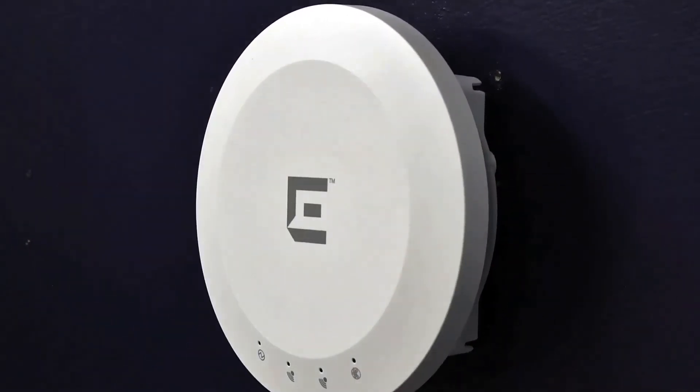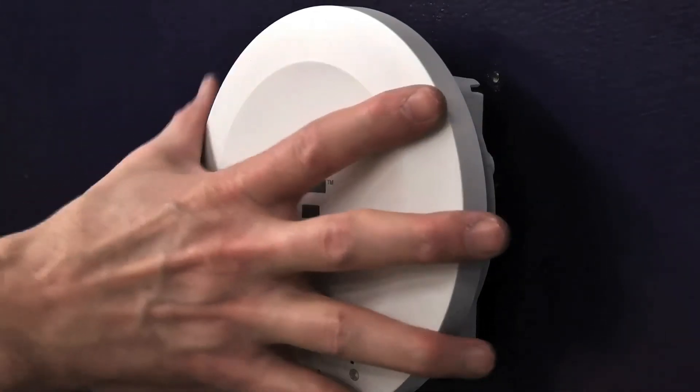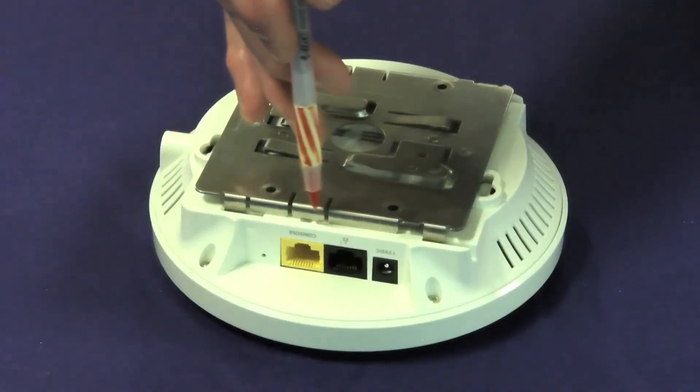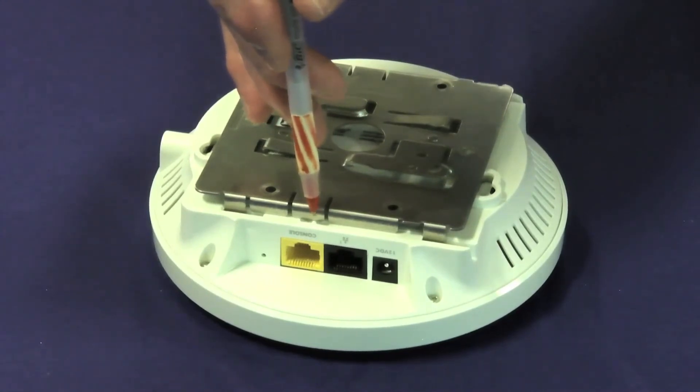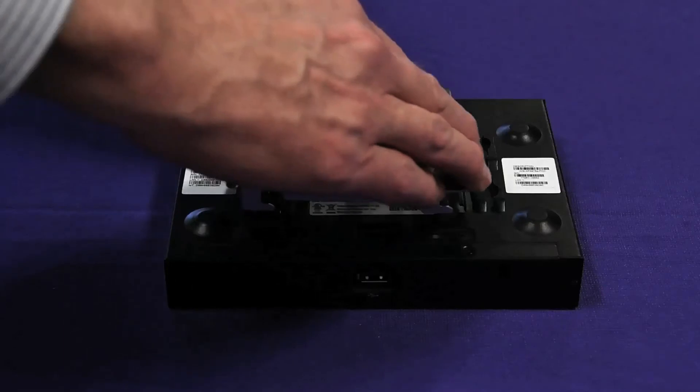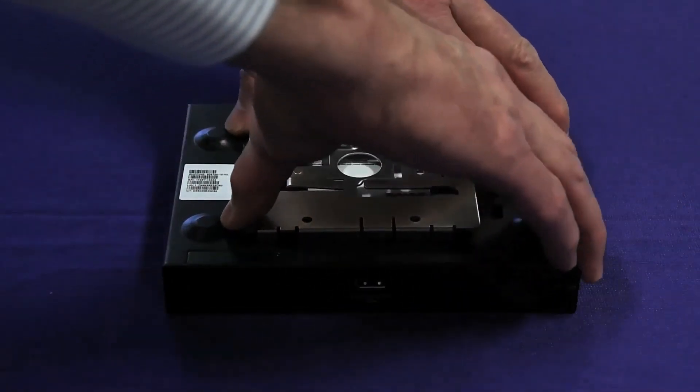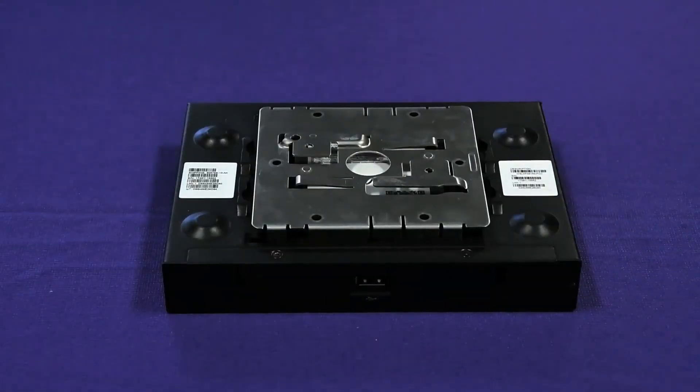To attach the bracket to the AP, align the feet to the four long holes so the locking tab will be engaged when the main bracket is inserted into the AP. Put the bracket's feet into the four long AP holes and push it so the locking tab engages.